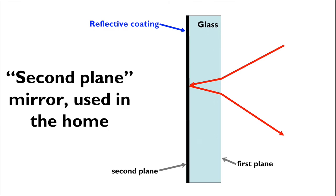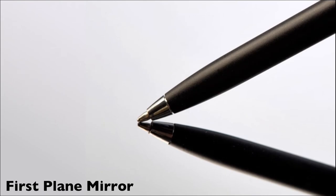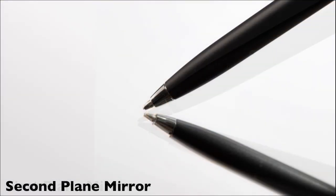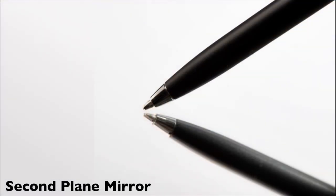Now compare this reflection off of a first plane mirror, which can reflect upwards of 95% of the incident light upon it, to this reflection off a second plane mirror, which is only 80-85% effective.